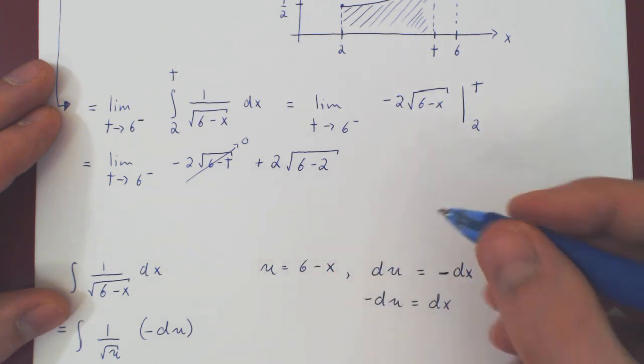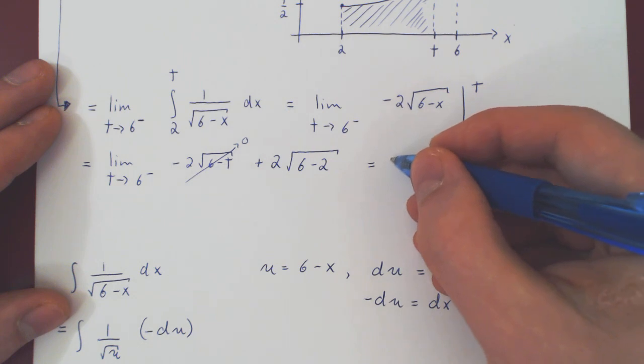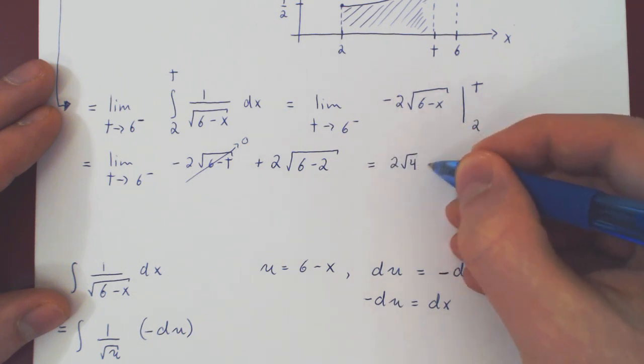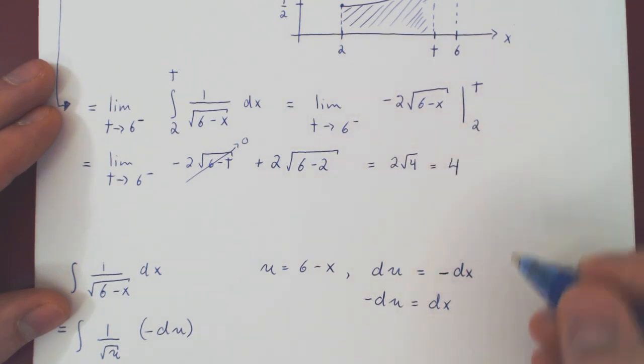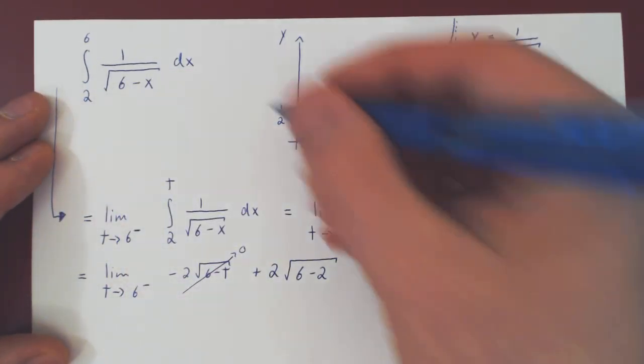This is a constant, and that's all we're left with. 2 times the root of 4. The root of 4 is obviously 2, and 2 times 2 is 4. And so our improper integral converges to 4.